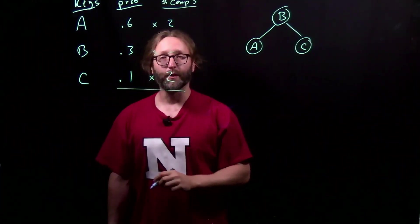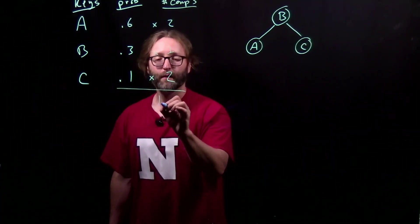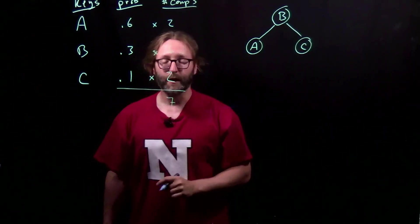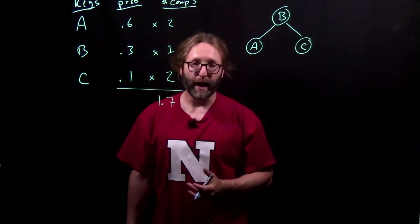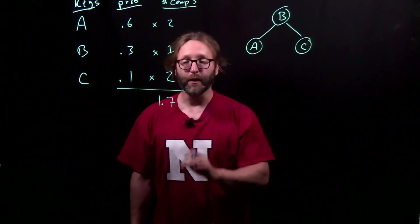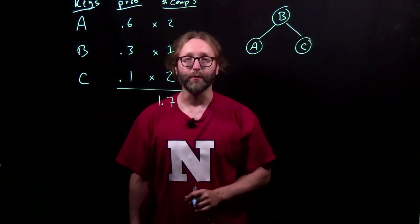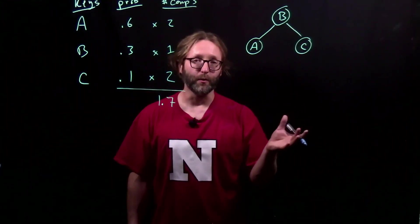So there are two comparisons. Likewise, there are two comparisons for C. But there's only one comparison for B, because you get lucky at the root, and you find what you're looking for. Summing up the weighted probabilities gives you an average number of key comparisons of 1.7. On average, to search for anything in this tree will require about 1.7 comparisons. Is that the best we can do?